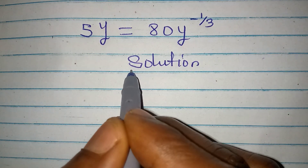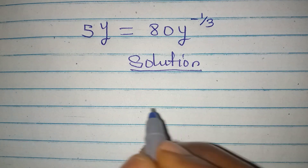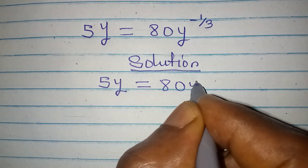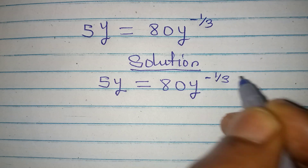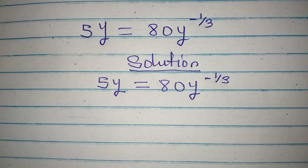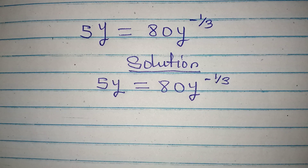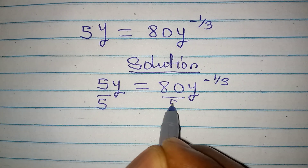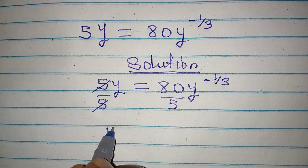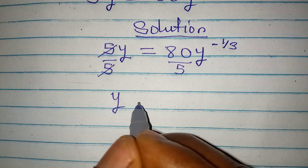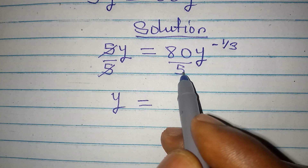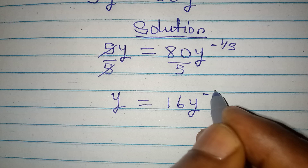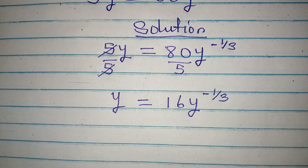Hello everyone, let's provide the solution to this problem. We have y and 5y to be equal to 80y to the power of negative 1 over 3. This is very simple, because what I'm expected to do right now is to divide everything by 5. Then I will divide this by 5. This will go with this, meaning that y is equal to 80 divided by 5, which will give 16. So we have 16y to the power of negative 1 over 3.